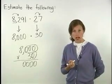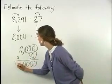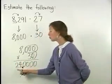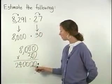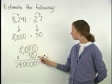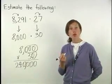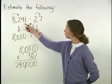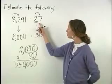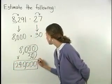Next, multiply the non-zero digits. 8 times 3 is 24. So we write a 24 in front of our zeros. This means that 8,000 times 30 is 240,000, which means that 8,291 times 27 is approximately 240,000.